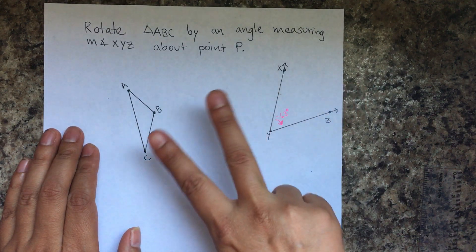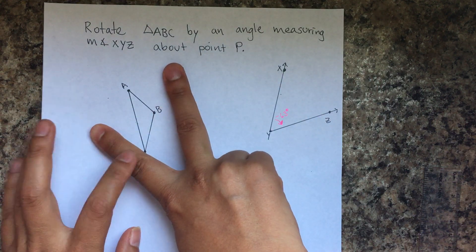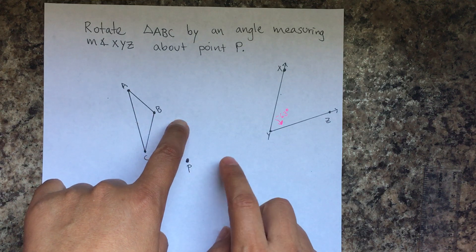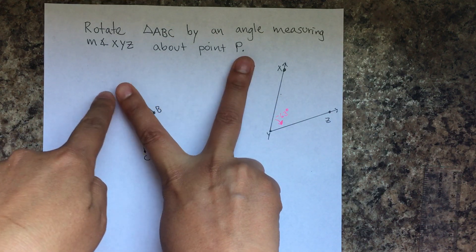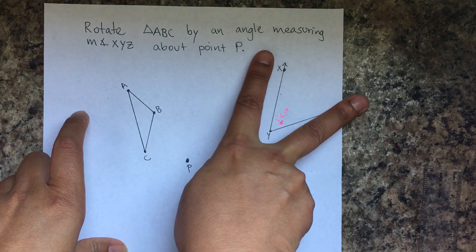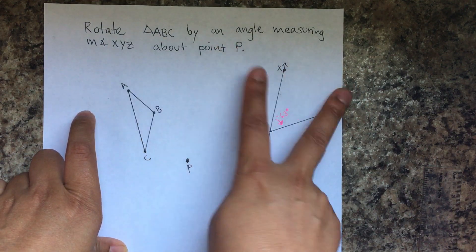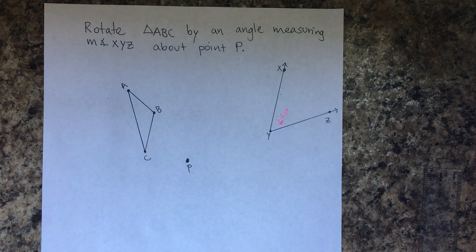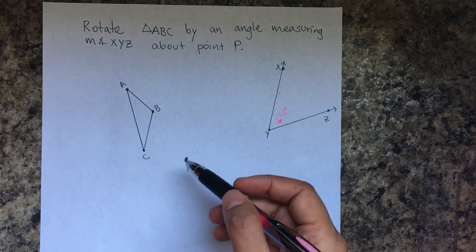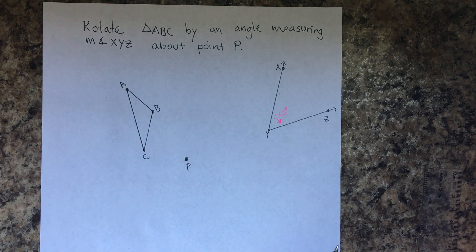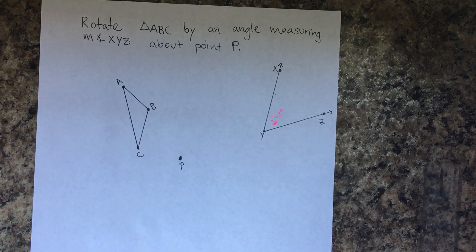In some videos, they copy using this angle — they copy where that point would be placed for A, then do the same thing for B, going back and forth. What I'm going to show you is a shortcut where you do one step for all three points first, the second step for all three points, and the third step for all three points, which should make it a little easier.